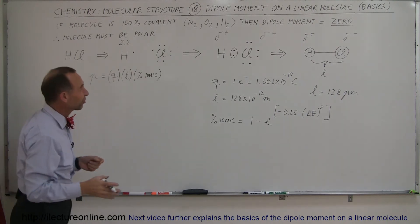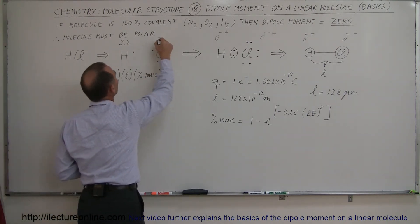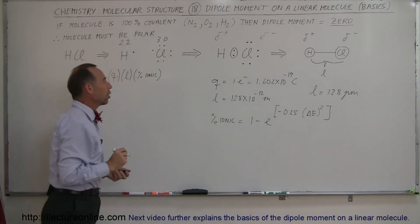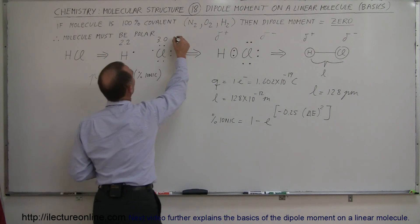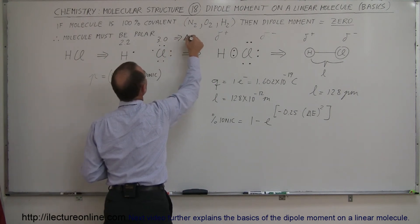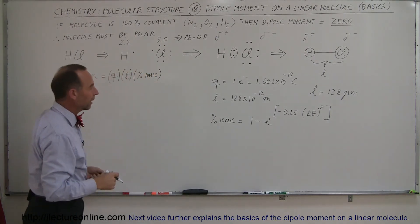Hydrogen has an electronegativity of about 2.2. Some charts will say 2.1, some charts will say 2.2. It depends what system you use. Chlorine has an electronegativity of 3.0. So the difference between them is 0.8. So from here, we can say that the delta E is equal to 0.8. So let's find out how ionic this bond is.